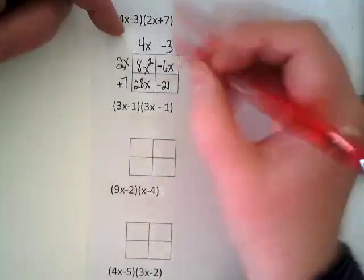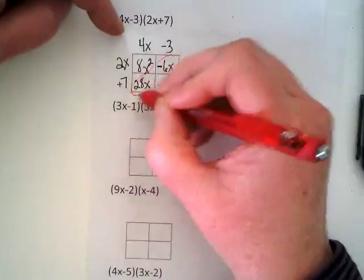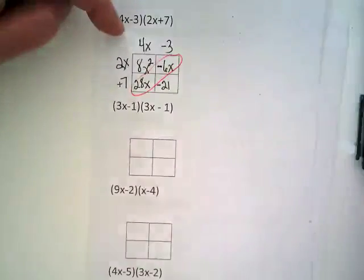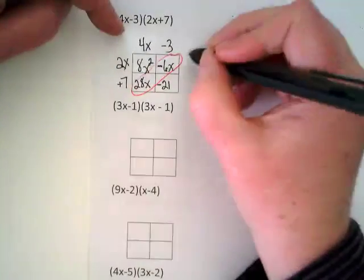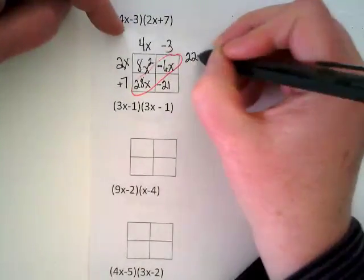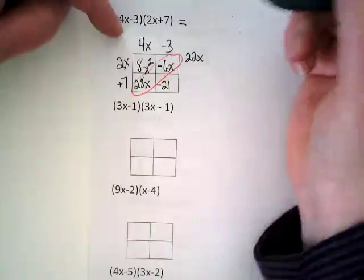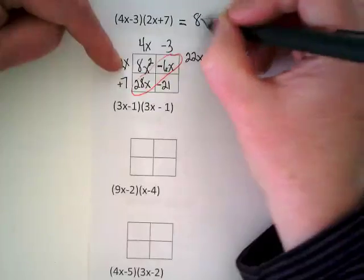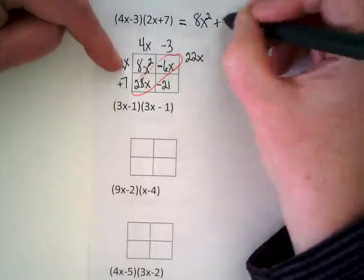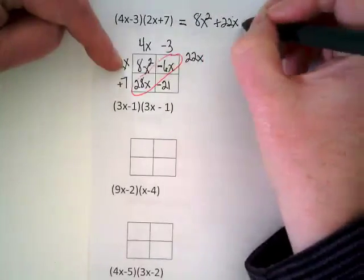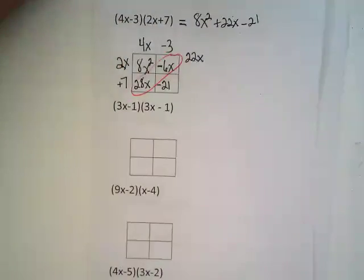Here are my like terms. They are diagonally together. 28X minus 6X is going to be 22X. So I'm going to rewrite this as 8X squared plus 22X minus 21.